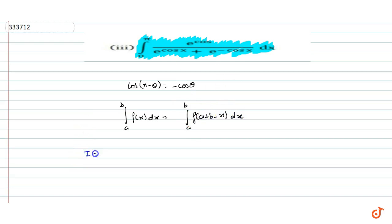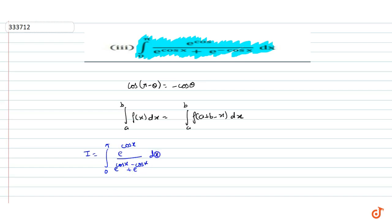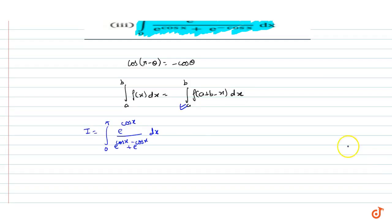Hamii jo I given hai, that is integration from 0 to pi, e to the power cos x upon e to the power cos x plus e to the power minus cos x, dx. Ab yaha pe formula use karte hai. Ye to ho gaya equation number 1.